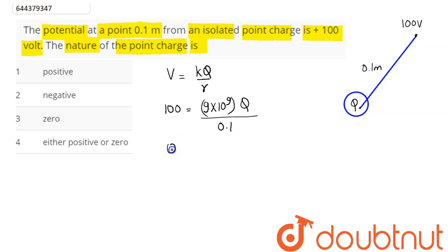So we can say the Q value comes out to be 1.9 into 10 power minus 8 coulomb.